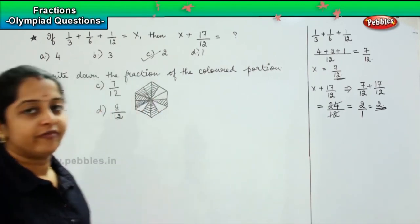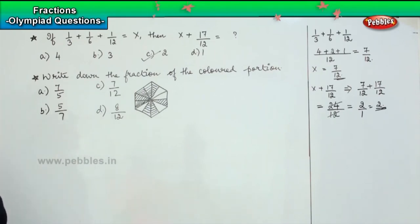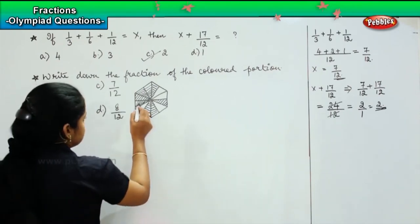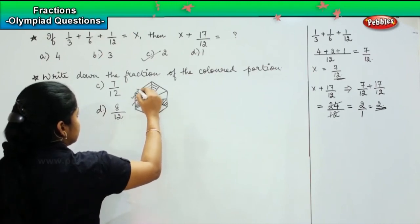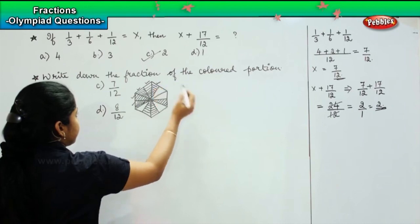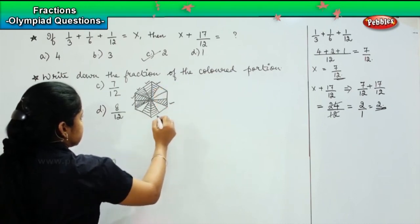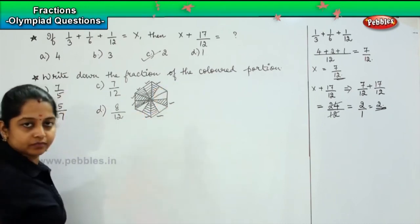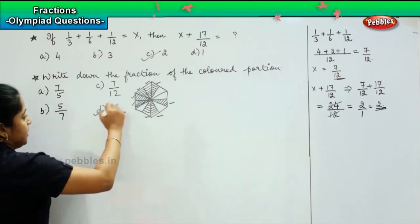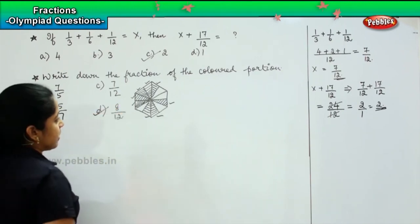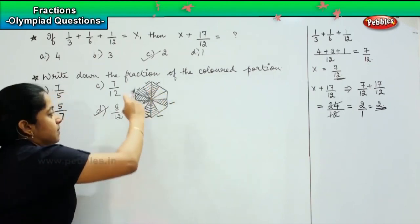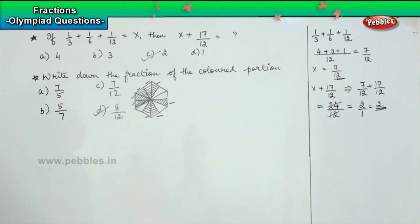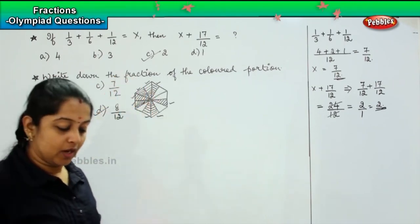Now we will count the colored parts. Counting the shaded portions: 1, 2, 3, 4, 5, 6, 7, 8. So the colored count is 8. Then counting the vacant portions: 1, 2, 3, 4. So 8 plus 4 makes 12 total portions. Out of 12 portions, 8 portions are colored — giving us 8/12, which is option D.